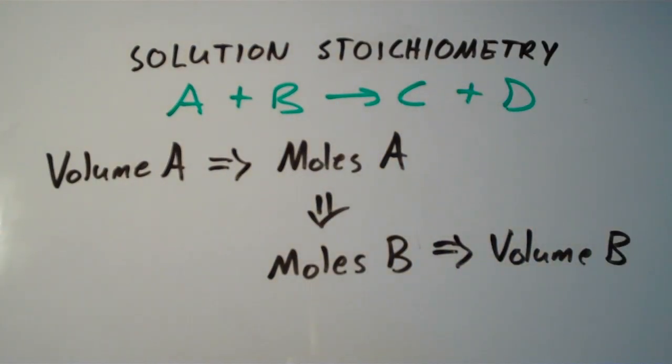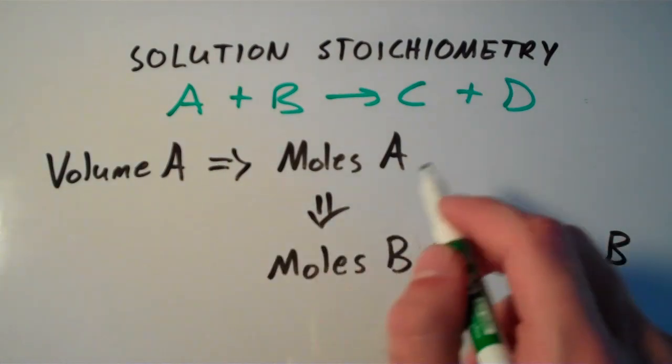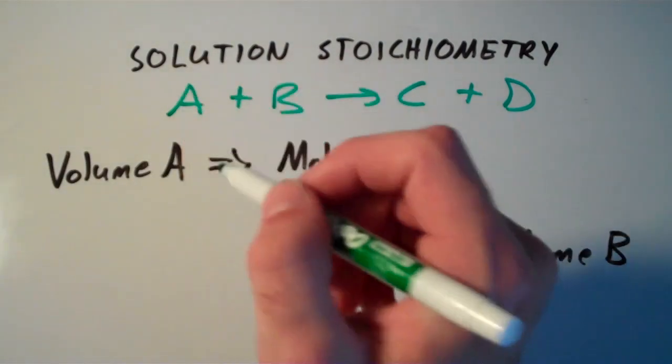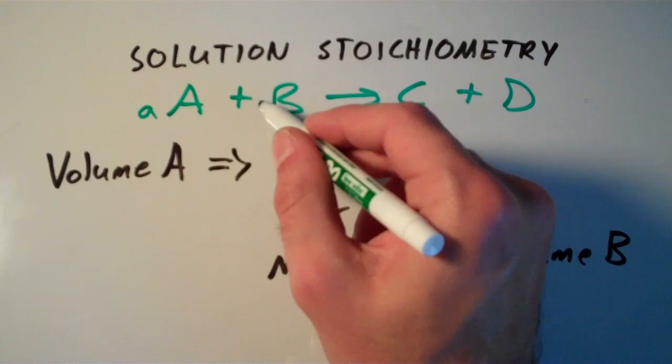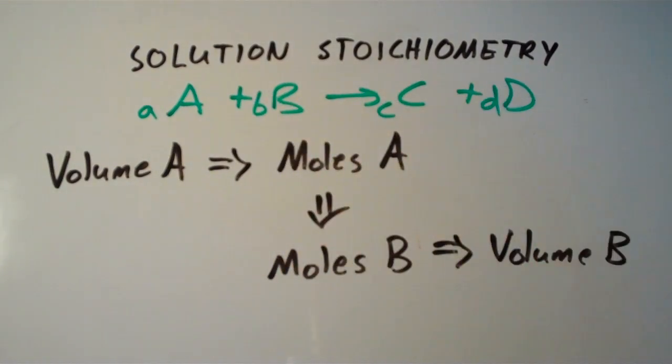And this equation is balanced, so I know the coefficients in front of A, B, C, and D. So I'm just going to call those little a, little b, little c, and little d.